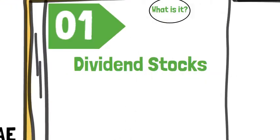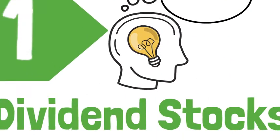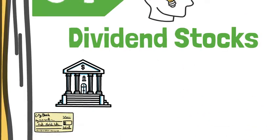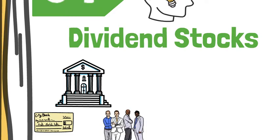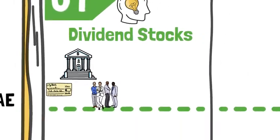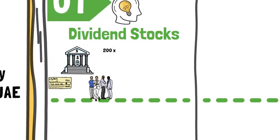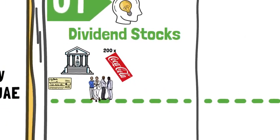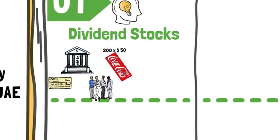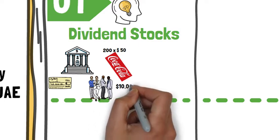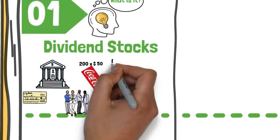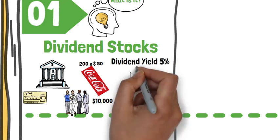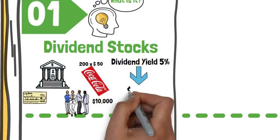Have you ever wondered what dividends are? Many companies distribute part of their profits to people that hold their stocks. For example, you bought 200 stocks of Coca-Cola with a share price of $50, which means you paid $10,000 to buy these stocks. If Coca-Cola's dividend yield was 5%, it means that you will get $500 as a dividend return.